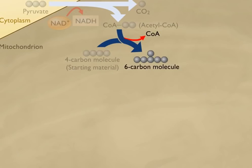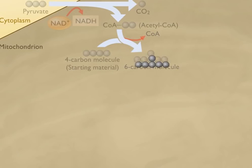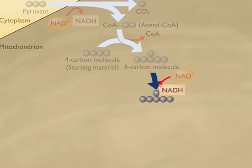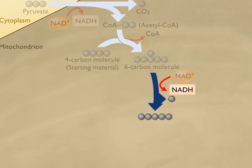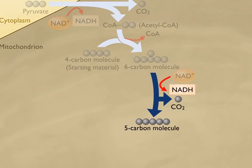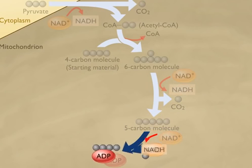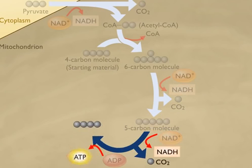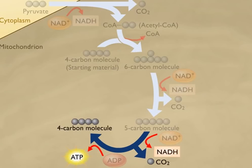Carbon dioxide is then released from the six-carbon molecule, forming a five-carbon compound. In this step, hydrogen is removed and transferred to NAD+ to form NADH. Next, a second oxidation and decarboxylation occurs, and again NADH and carbon dioxide are produced.